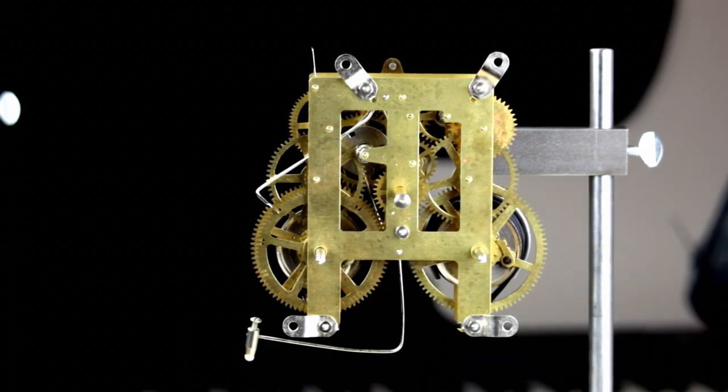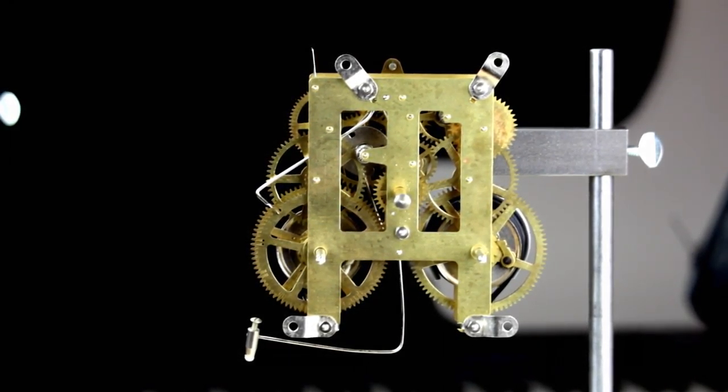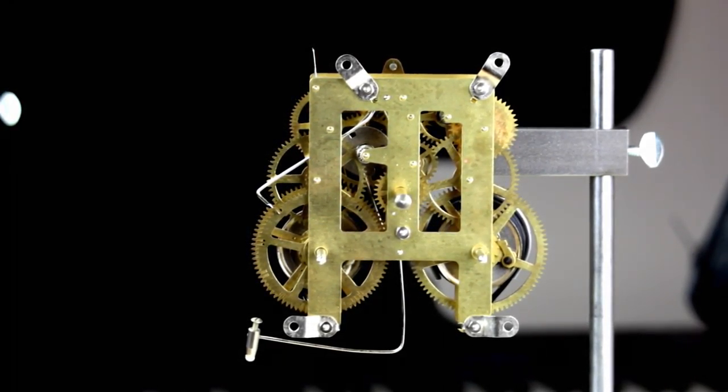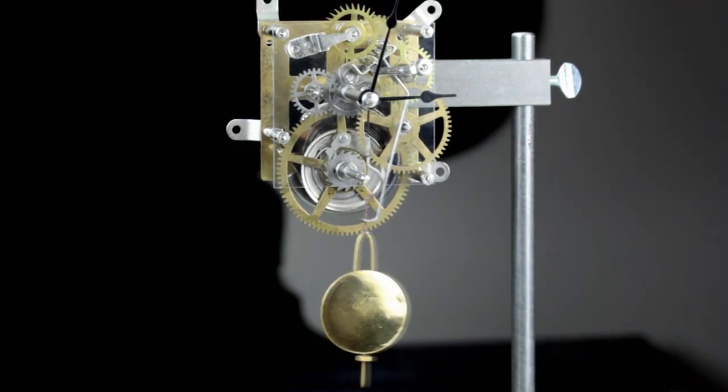No matter how many wheel trains a clock may have, they are all dependent on the going train. Our movement is a time-only movement, so it has only one train, the going train.